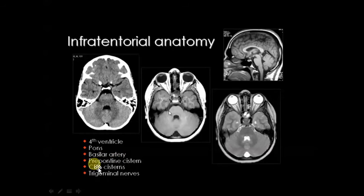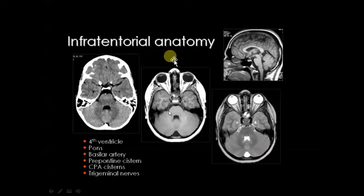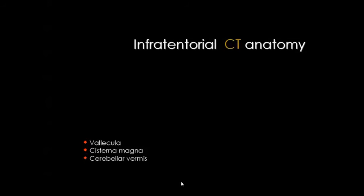So here is the prepontine cistern, the CPA cistern or cerebellopontine angle or ambient cistern, and the trigeminal nerve. These are the structures we can see in infratentorial anatomy. Moving to the infratentorial CT anatomy, we can also find the cisterna magna and the cerebellar vermis.